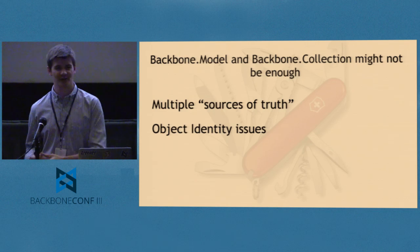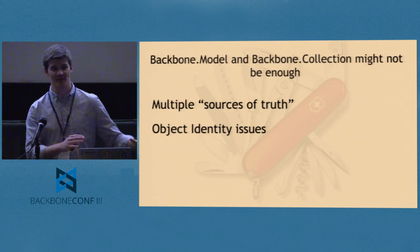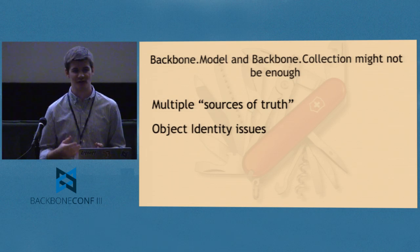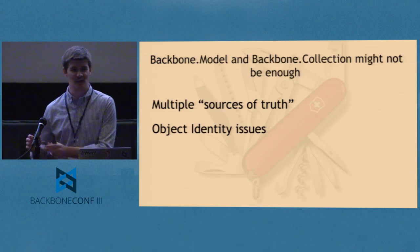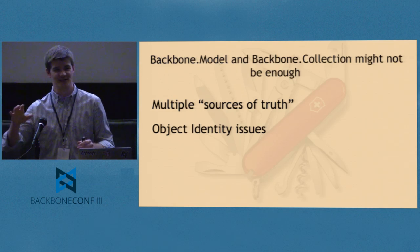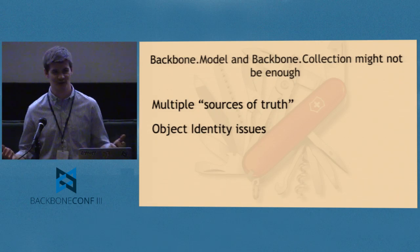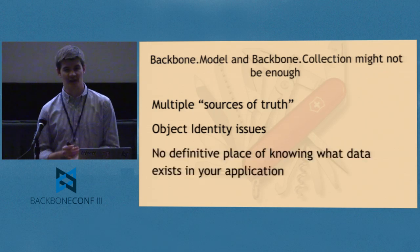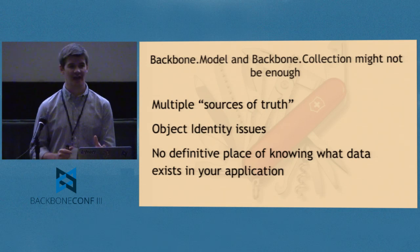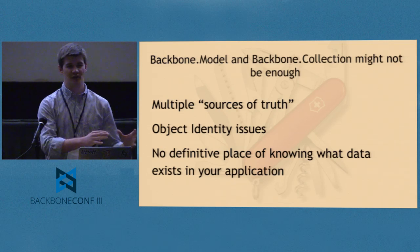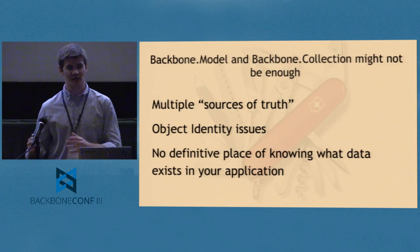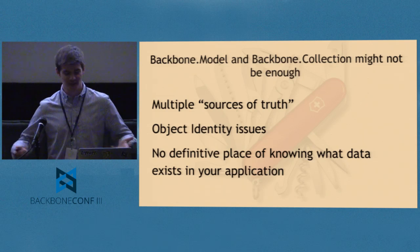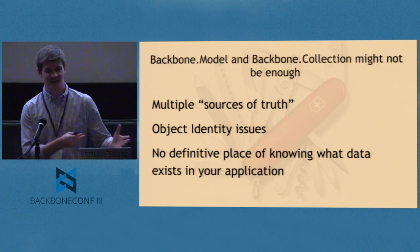Object identity issues are similar: maybe you reference the same user from multiple places, but then you don't want that same object being mutated when it's supposed to be a different instance. It really just boils down to there being no definitive place to know what data exists in your application. In our case with hundreds of interdependent models, changes were passing through and it was very difficult without a predefined space to know what's actually in your app at any given time.